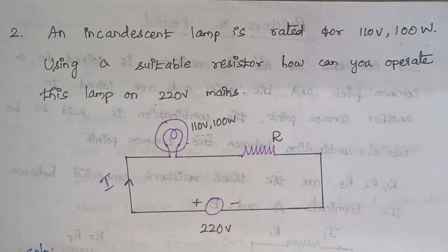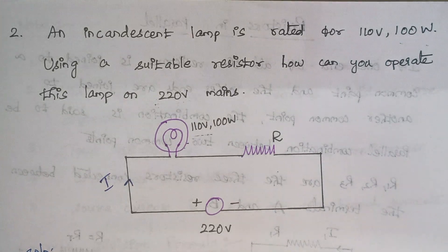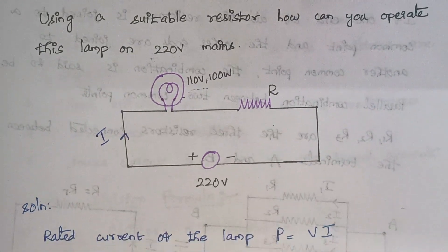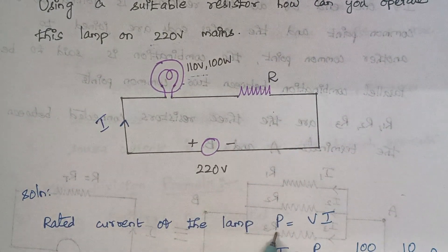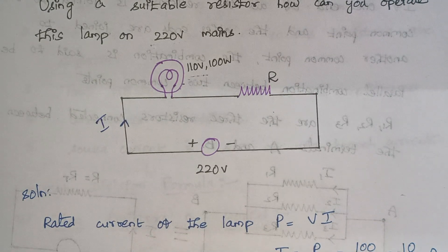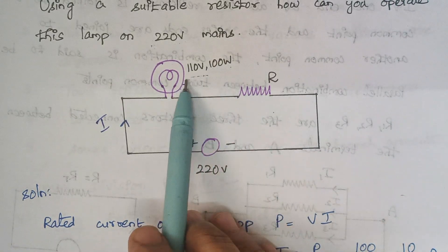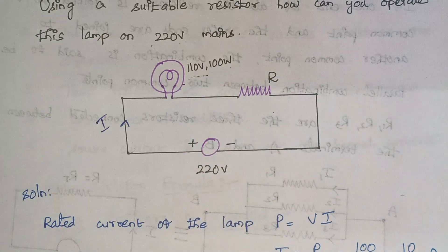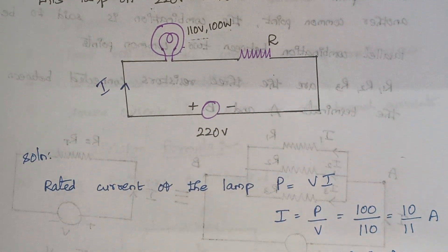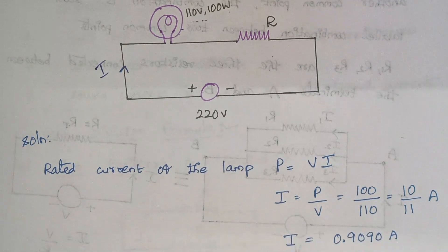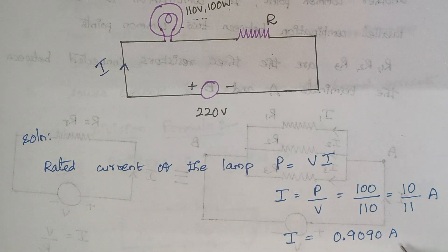Let I be the current flowing in the circuit. From the power formula P = V × I, we get I = P ÷ V. The power rating is 100 watts and the rated voltage is 110 volts, so I = 100 ÷ 110 = 10/11 ≈ 0.9090 amps.